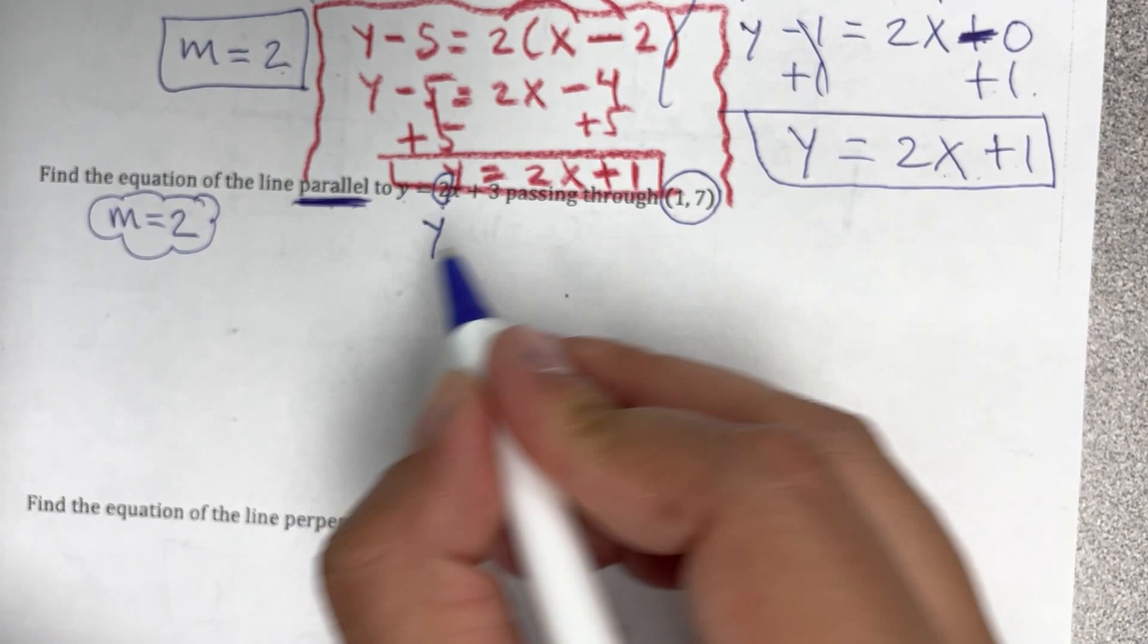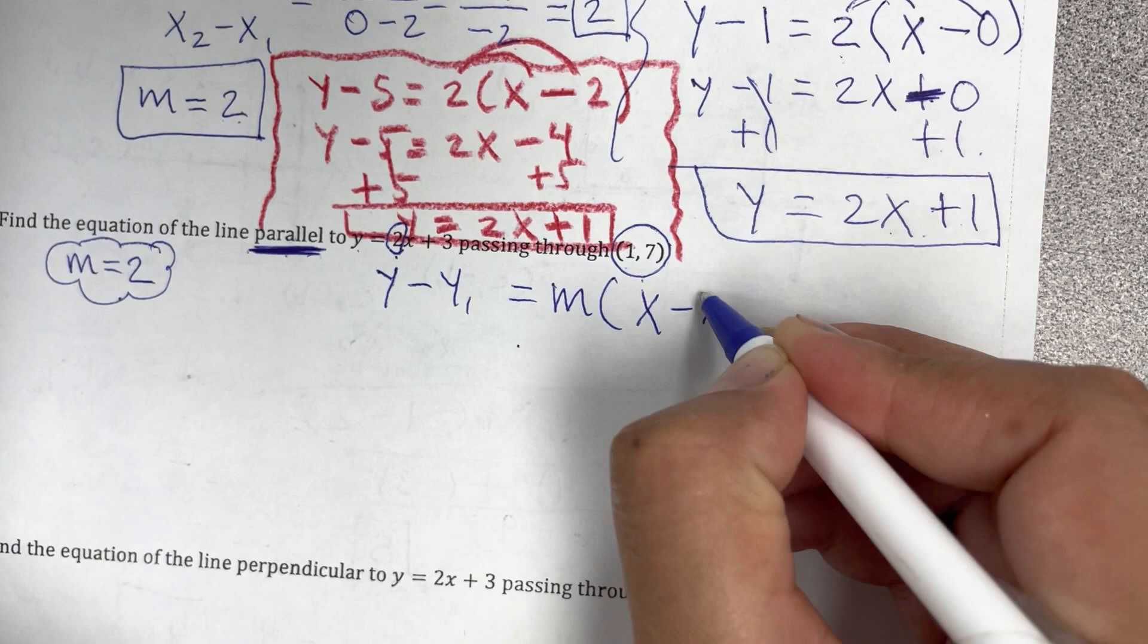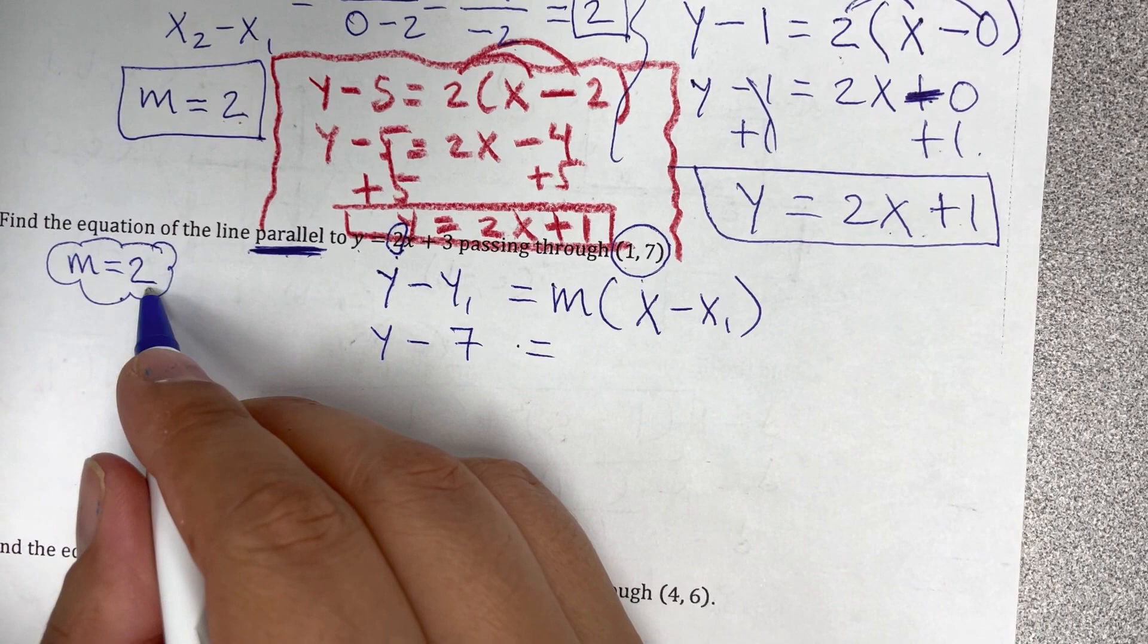So ahora sí, ya tengo el slope, ya tengo el punto. We just use the same formula, y minus y1 equals m times x minus x1. We substitute, so it's going to be y minus the value of y, which is 7, equals the slope, which is 2 times x minus the x, which is 1.